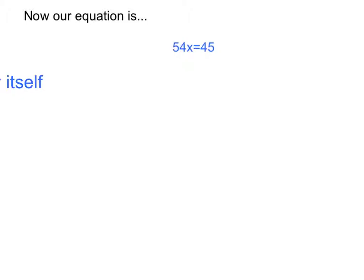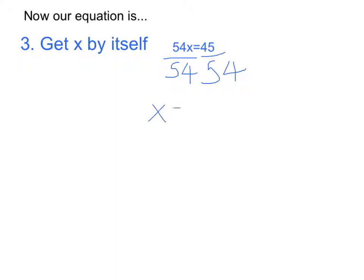The next step in solving the equation is to get x by itself. In order to do this step, we must divide 54x divided by 54 and divide 45 by 54. So, x should equal 45 over 54, which can be reduced by dividing both the numerator and the denominator by 9 to 5 over 6. So, the answer is x equals 5 over 6.